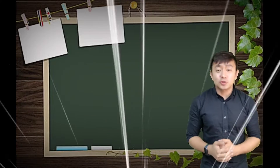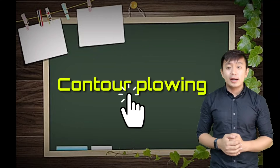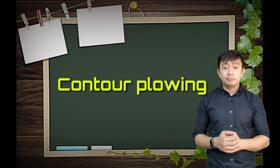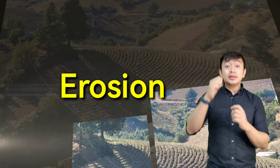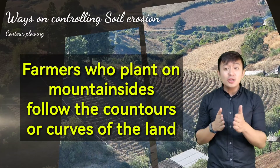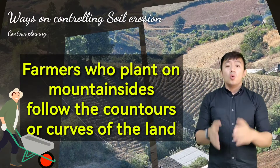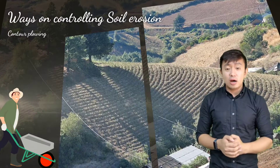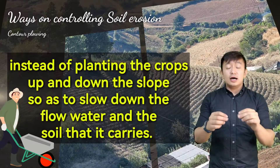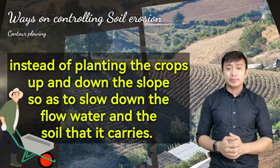The first method in controlling soil erosion is called contour plowing. Since erosion takes place, what do the farmers do? They follow the curves of the mountain. When they follow the curves of the mountain, we call this technique contour plowing.